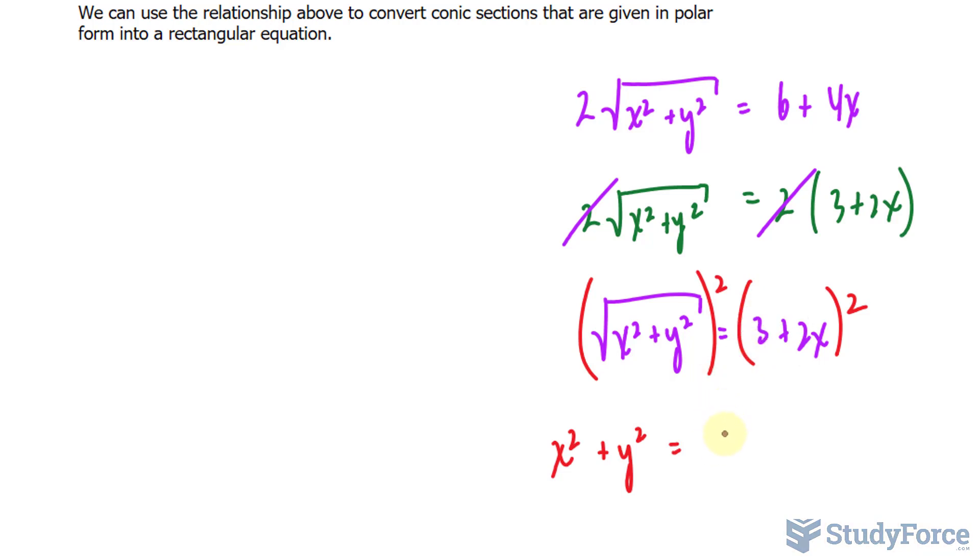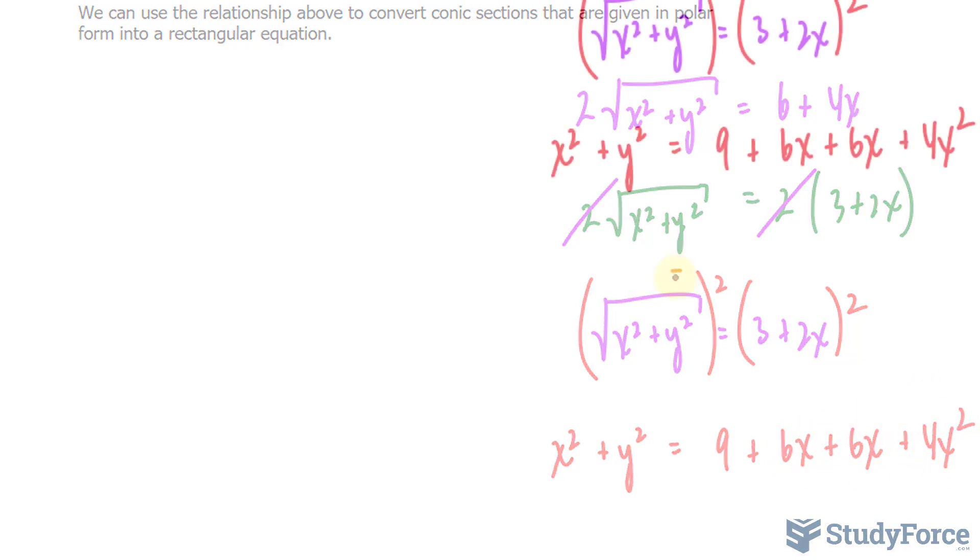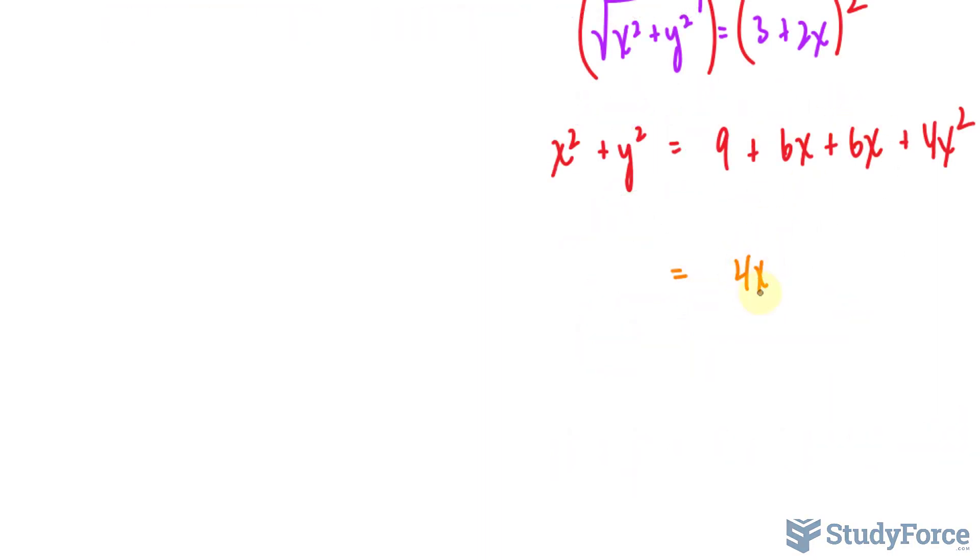and if we expand that, we get 3 times 3 is 9 plus 3 times 2x is 6x plus another 6x plus 4x squared. On the right side we get 4x squared plus 12x plus 9.